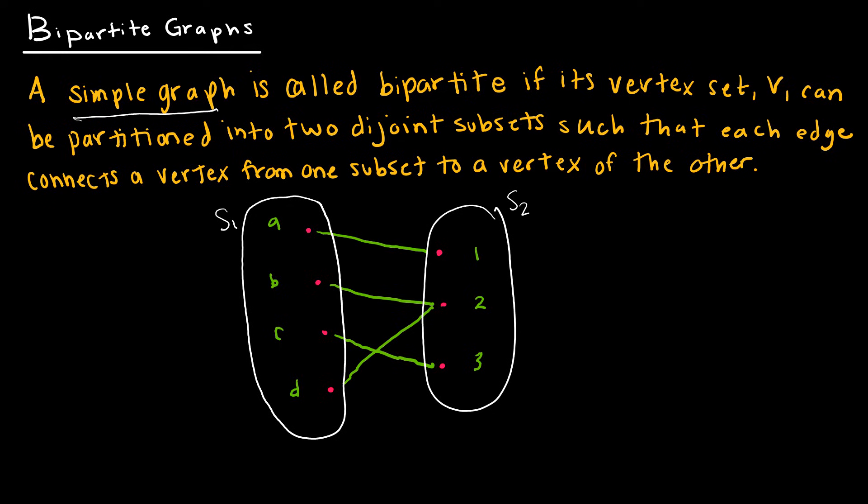The only edges that exist go from one subset to the other. Notice here, A is not connected to B or C or D, and 1 is not connected to 2 or 3. But I can have edges from set one to set two.